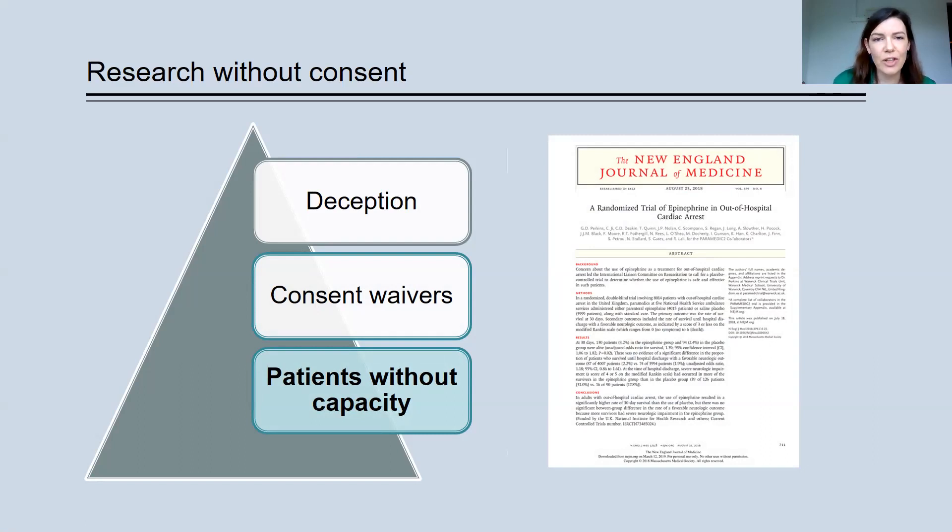The information process for the community involved community ads on radio, advertising, and the option for people to opt out if they wanted. So if people felt very strongly about the study and had heard about it and thought they were at high risk of cardiac arrest, they could order a bracelet and wear that bracelet for the entire duration of the study. And then if they did have a cardiac arrest and when the paramedics arrived, they would not include them in the study.